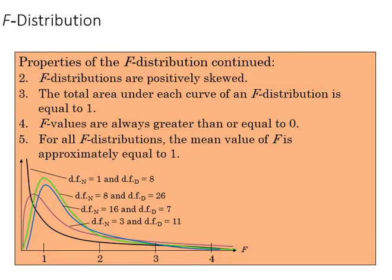Also like the chi-square distribution, the F distribution is positively skewed. The total area under the F distribution is equal to one, but the actual shape of the curve is going to be determined by the degrees of freedom in both the numerator and the denominator.